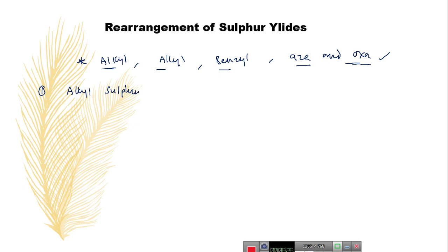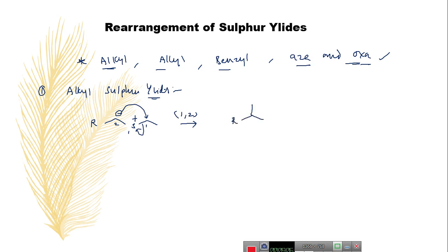First, let us start with alkyl sulfur ylides. For example, if you have a sulfur ylide, this sulfur ylide generally undergoes a 1,2 rearrangement, giving you a stable sulfur compound. So, alkyl sulfur ylides involve a 1,2 kind of rearrangement, and the rearrangement of this alkyl ylide generally gives you the stable sulfide.